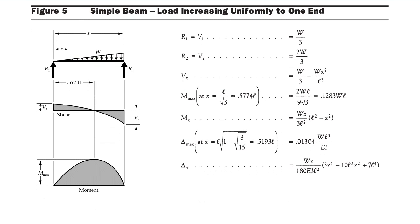For a triangular load, at support R1 the load value is 0 and at support R2 the load value is w, as shown in the figure. The maximum bending moment value is 2wl divided by 9√3. The maximum bending moment occurs at a distance of 0.5774l, or l/√3. The maximum deflection is 0.1304wl³/EI and it occurs at a distance of 0.5193l.